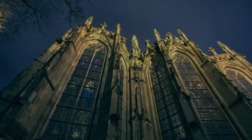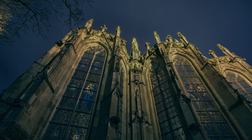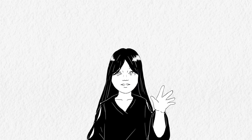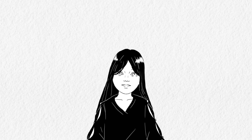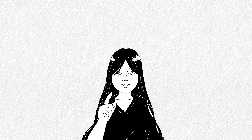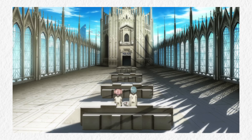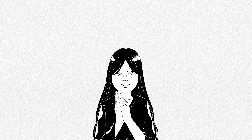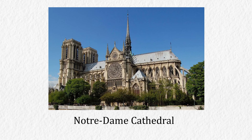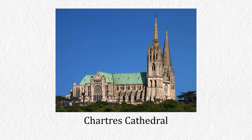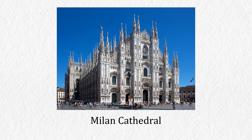Gothic Architecture — the dark and dramatic architectural style everyone's talking about. Even if you are not that into dark aesthetics, chances are you have seen a lot of Gothic buildings and churches in films and cartoons already. Many well-known cathedrals were built in this style, for example Notre Dame Cathedral, Chartres Cathedral, Westminster Abbey, and Milan Cathedral.